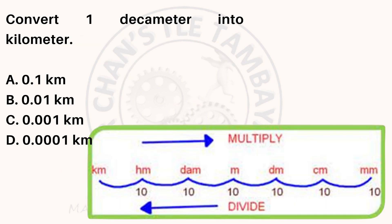Convert 1 decimeter into kilometer. A. 0.1 kilometers. B. 0.01 kilometers. C. 0.001 kilometers. D. 0.0001 kilometers.